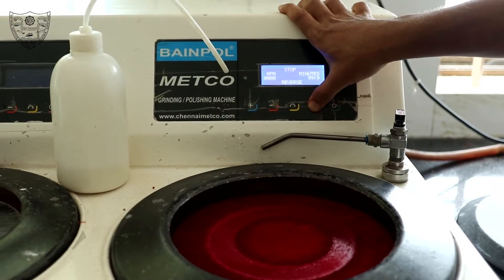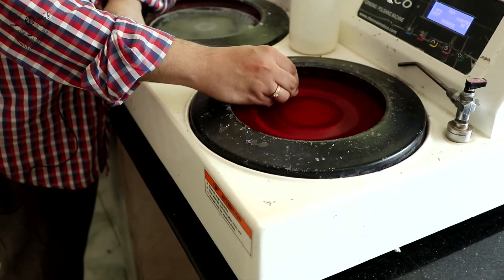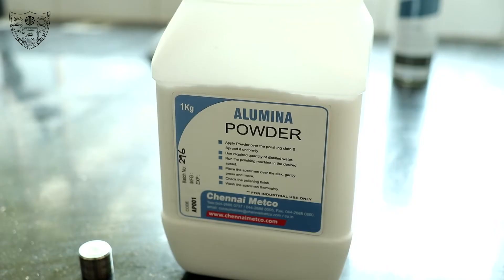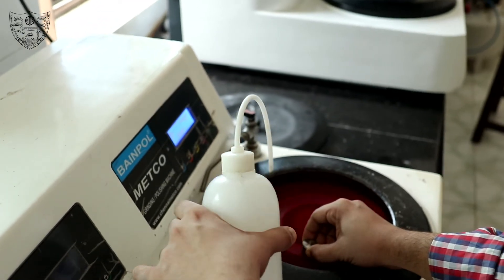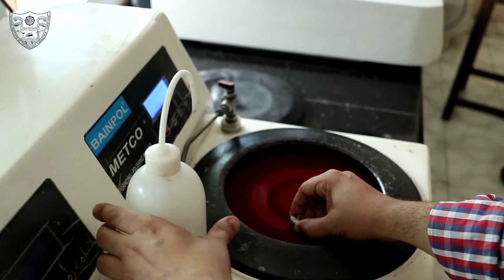Now we do the final polishing on a disc polishing unit. We use the alumina as polishing abrasive. After fine polishing, we etch the specimen.